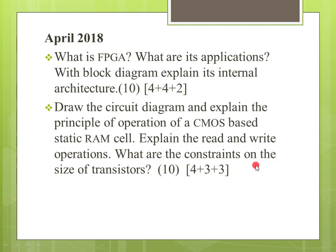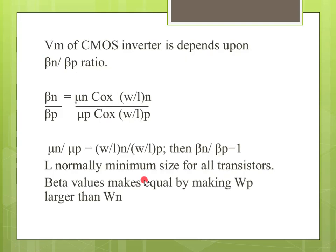The 6T SRAM has 6 transistors: 2 access transistors and 4 driver/load transistors. The bit line and word line are explained. Consider the read and write operations. We use cross-coupled CMOS inverters for static RAM.